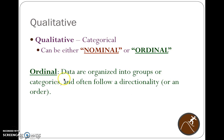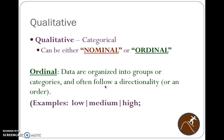Ordinal data are organized with a pattern or directionality. Things can be scored as low, medium, or high, or age data can be categorized from infant to child to teenager to adult to elderly or retiree.